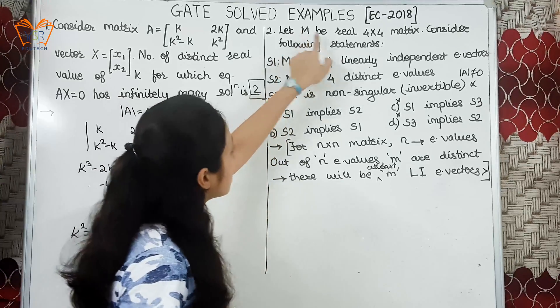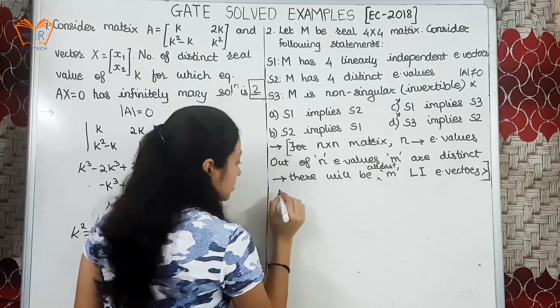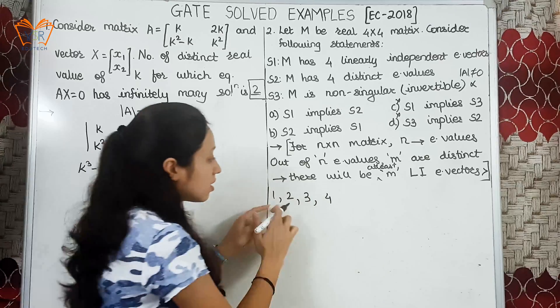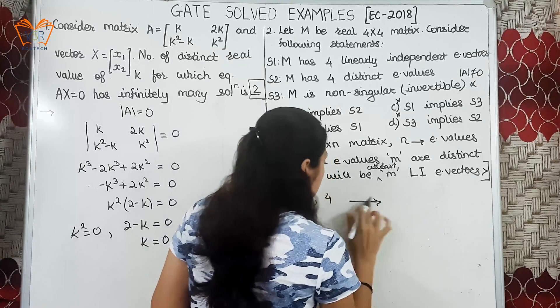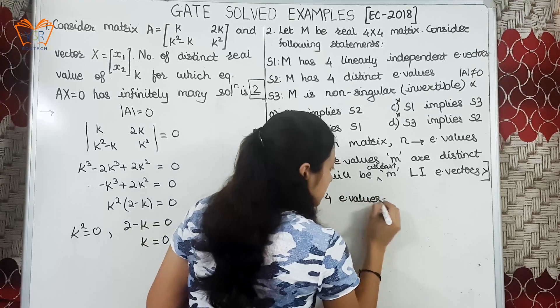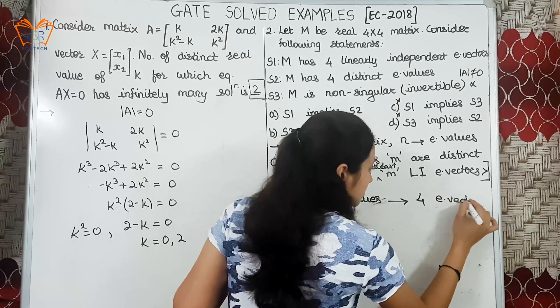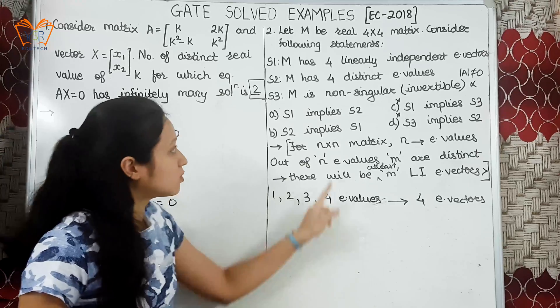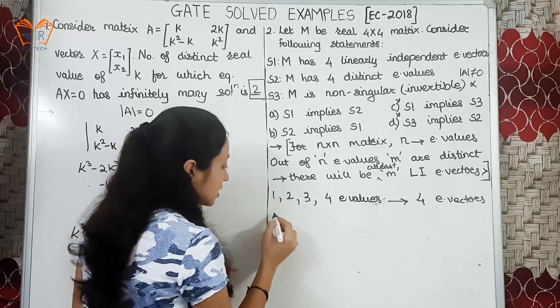As you can see the M is 4 by 4 matrix, so there will be 4 eigenvalues. Let my eigenvalues be 1, 2, 3, 4. As there are 4 eigenvalues there will be 4 linearly dependent eigenvalues. These are 4 distinct eigenvalues. The word distinct means the eigenvalues are not repeated. This is the first case.